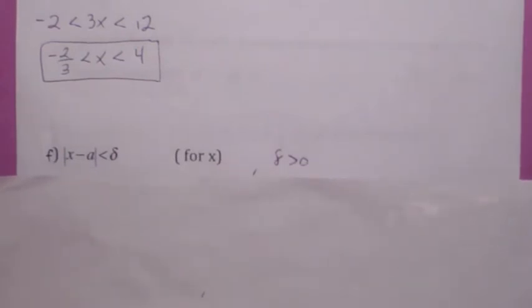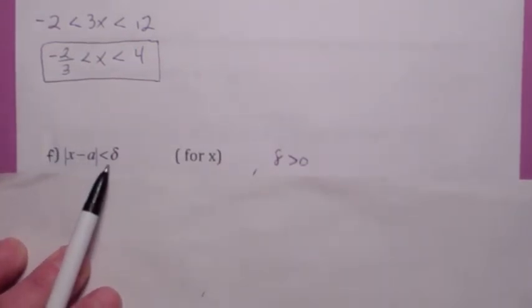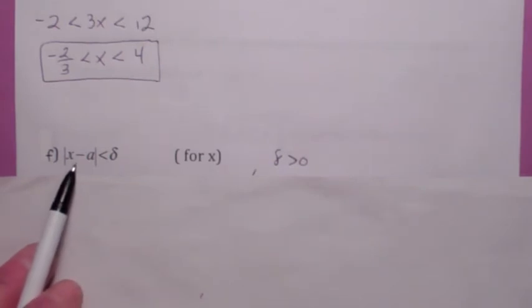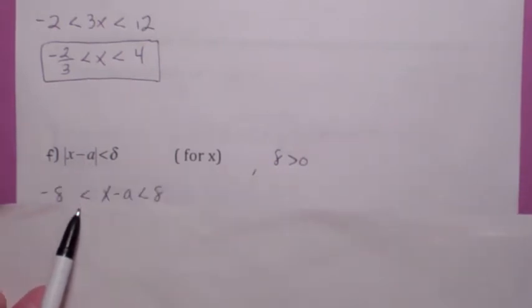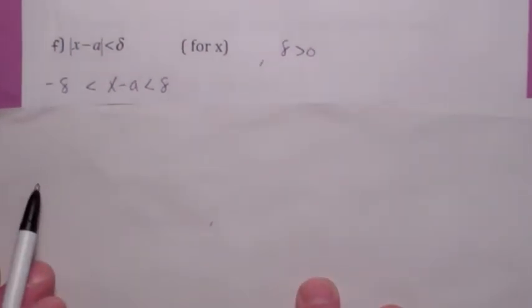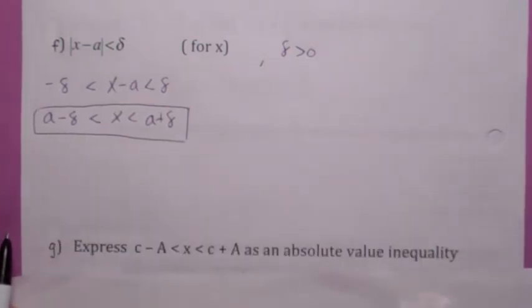How about this one? Delta is just a positive number — it's a constant, some positive constant. So we want to solve this absolute value inequality for x. Remember, what's inside the absolute value bars has to be between negative delta and delta. So to solve it for x, you would just add a to all three sides.